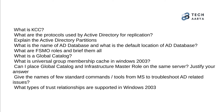62. What are the protocols used by Active Directory for replication? 63. Explain the Active Directory partitions. 64. What is the name of the AD database and what is the default location of the database? 65. What are the FSMO roles — briefly describe them all. 66. What is a global catalog? 67. What is universal group membership cache in Windows 2003? 68. Can I place the global catalog and infrastructure master role on the same server? Justify your answer.